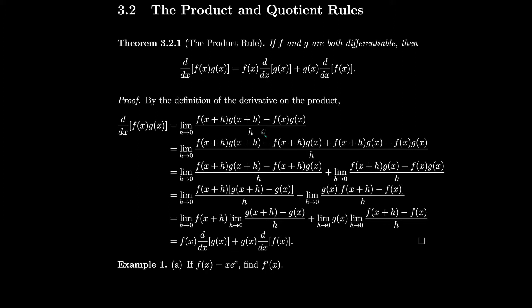We group together terms on the left and terms on the right, using the fact that the limit of a sum is the sum of the limits. We factor out f(x+h) and g(x) from their respective groups. Then, since the limit of a product is the product of the limits, the limit of f(x+h) as h goes to 0 is just f(x), and the remaining limits give us the derivatives of g and f respectively.